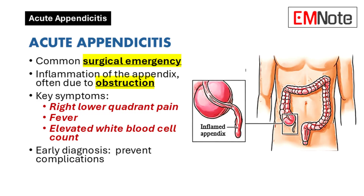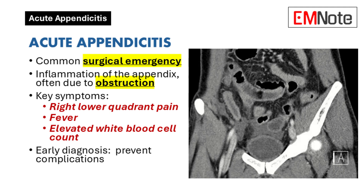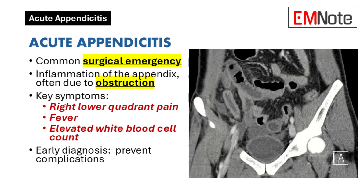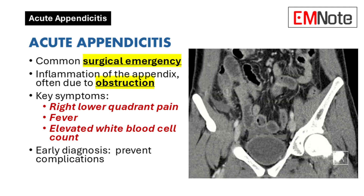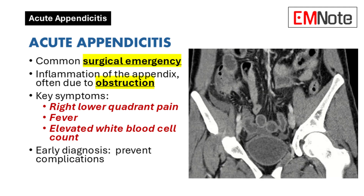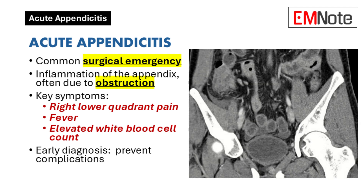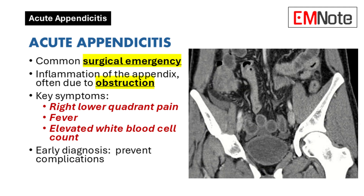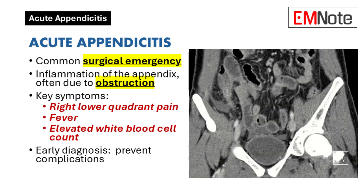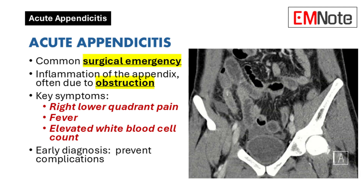Acute appendicitis is a common surgical emergency characterized by inflammation of the appendix, often due to obstruction. The condition typically presents with right lower quadrant pain, fever, and elevated white blood cell counts. Accurate diagnosis is crucial to prevent complications such as perforation or abscess formation.